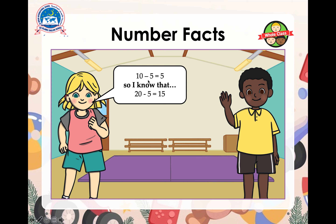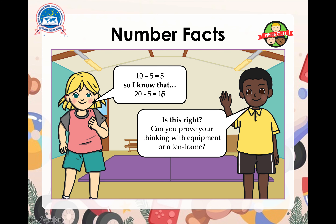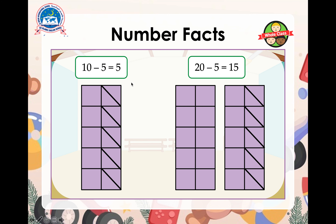So if we have 10 minus 5 equals 5, we can also see that 20 minus 5 equals 15. We can use this to work out the same thing: 10 minus 5 equals 5, and 20 minus 5 equals 15.